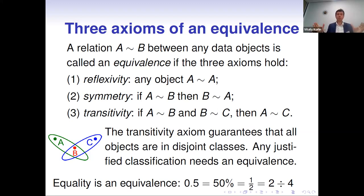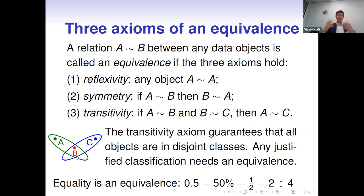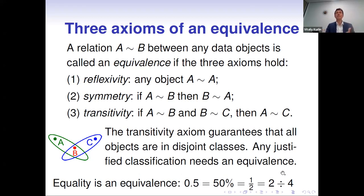All axioms are important, but especially transitivity guarantees a well-defined classification — splitting all objects into disjoint classes. If two classes share a common point, they must coincide. There are many examples of equivalence relations; for example, equality between numbers is one we study from primary school — one half can be written in many different ways, but it is always the same object.